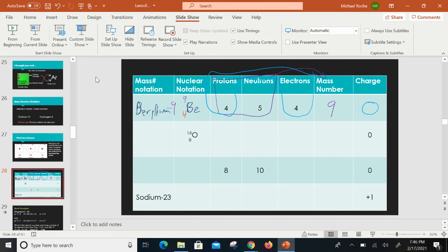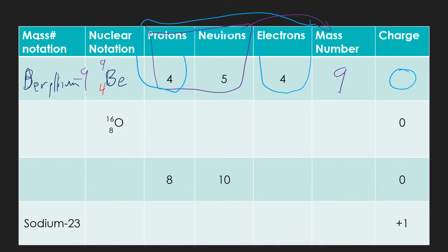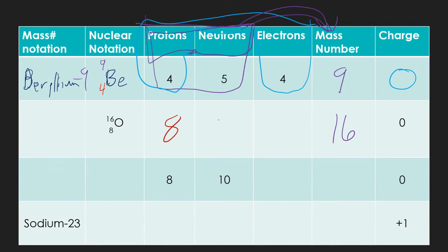Next example: oxygen. In nuclear notation, the atomic number (8) goes on the bottom and the mass number (16) goes on top. We know for certain we have 8 protons because that's what makes oxygen. Since protons plus neutrons equal the mass number: 8 + ? = 16, so there are 8 neutrons. Because the charge is zero, electrons equal protons, so there are also 8 electrons.